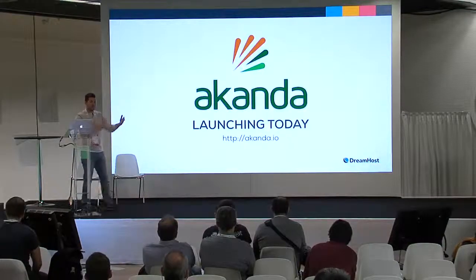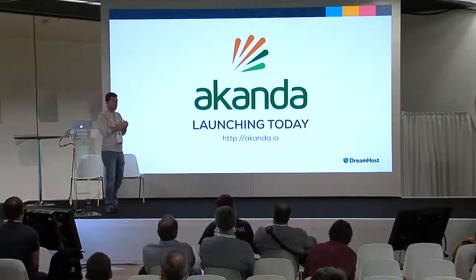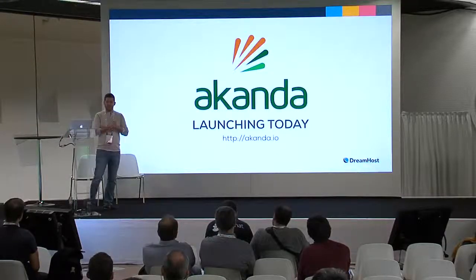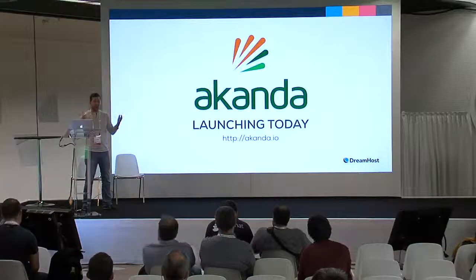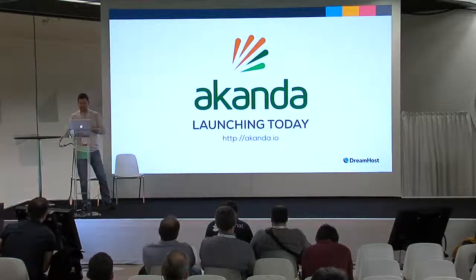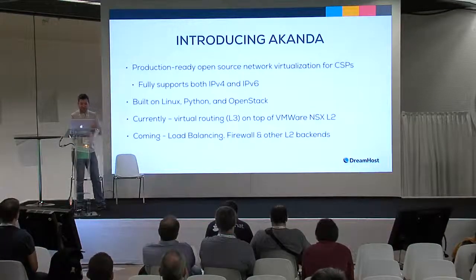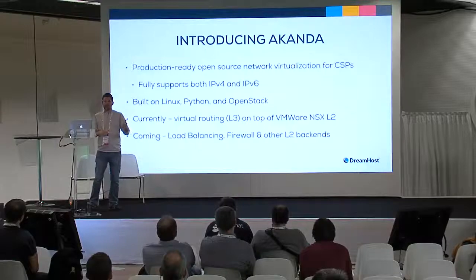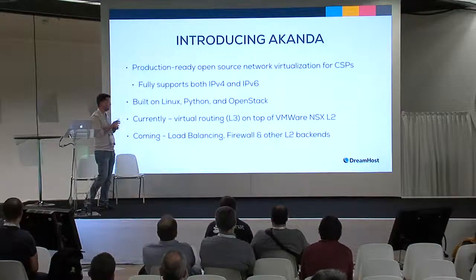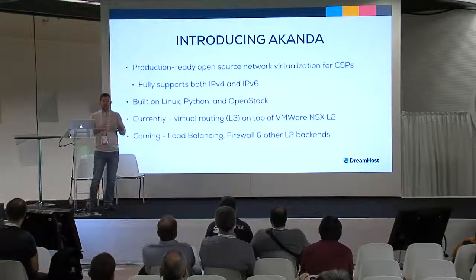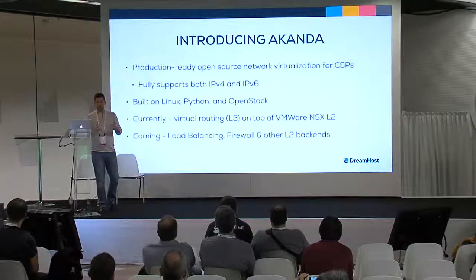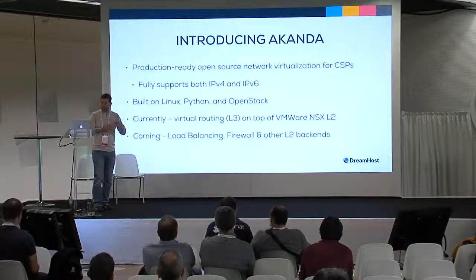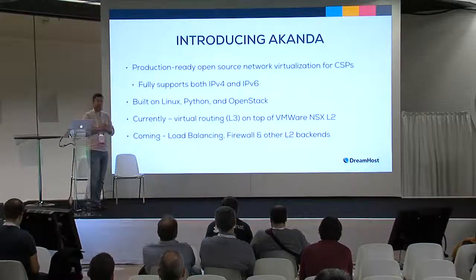Let's talk about Akanda. Just like we did with Ink Tank and spun it out to support Ceph, we're spinning out a new business called Akanda — we're announcing that today. You may have seen the press release; we are at booth E30. Akanda is all about open source networking and open source network virtualization. It's production-ready open source network virtualization for cloud service providers — this is the technology we're using in DreamCompute today to power all the L3-plus network services. It supports both IPv4 and IPv6, which we felt was a strong and important need.